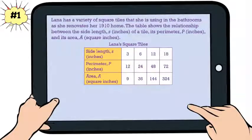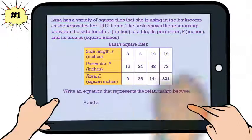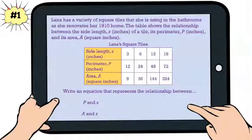Let's try our practice problem together. Lana has a variety of square tiles that she is using in the bathrooms as she renovates her 1910 home. The table shows the relationship between the side length S in inches of a tile, its perimeter P in inches, and its area A in square inches. Write an equation that represents the relationship between the perimeter and its side and the area and its side.